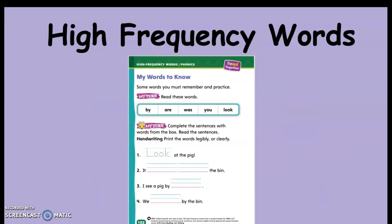Now what you guys are going to do is you're going to get your My View book and you're going to open to page 102, one-zero-two. And these are the words, these are our high frequency words, which are words to know. My words to know. Some words you must remember and practice, so that's what we're doing today. Here is a word bank of words we just looked at: by, are, was, you, look. We're going to complete the sentences with words from the box. Read the sentences. Print the words legibly and clearly, that means doing your best handwriting.